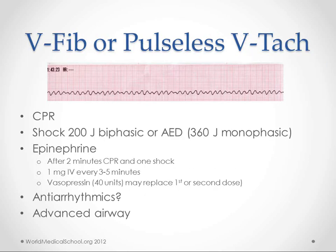Moving on to V-fib or pulseless V-tach — CPR is again most important. We shock these people at 200 joules with a biphasic defibrillator, or use an AED if available. Monophasic machines are run at 360 joules. The biphasic passes a charge that comes back through and is more effective at lower amplitudes, which is why it's mainly used today.